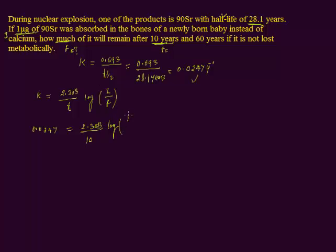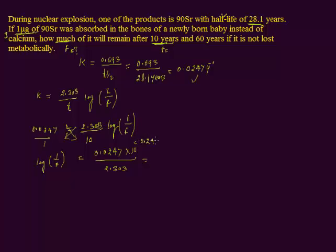The initial amount is 1 microgram and the final amount is unknown. Doing the cross-multiplication, you get: log(1/f) = 0.0247 × 10 divided by 2.303. Multiplying 0.0247 by 10 gives 0.247, and dividing 0.247 by 2.303 gives 0.107.